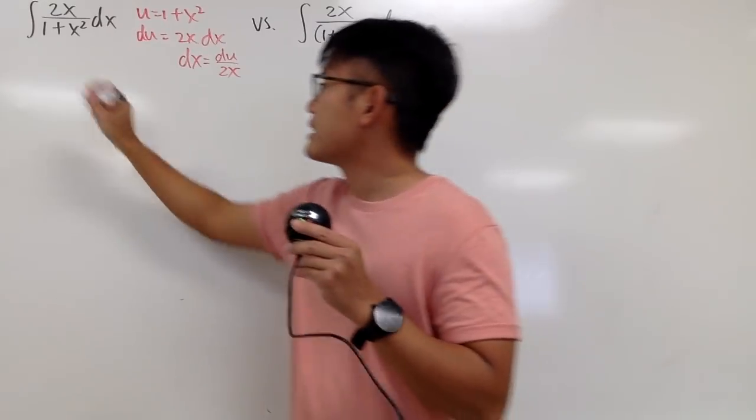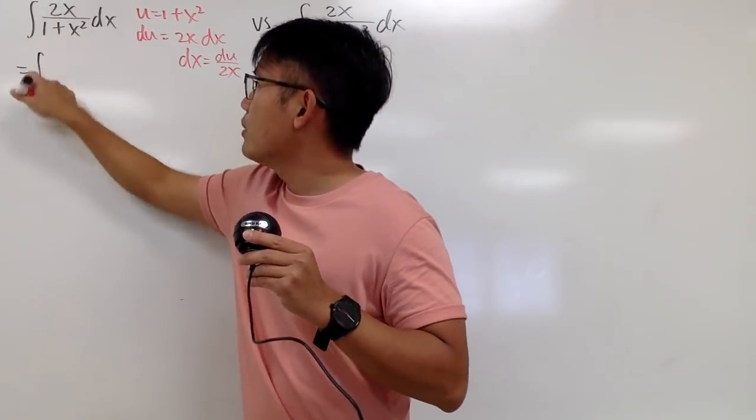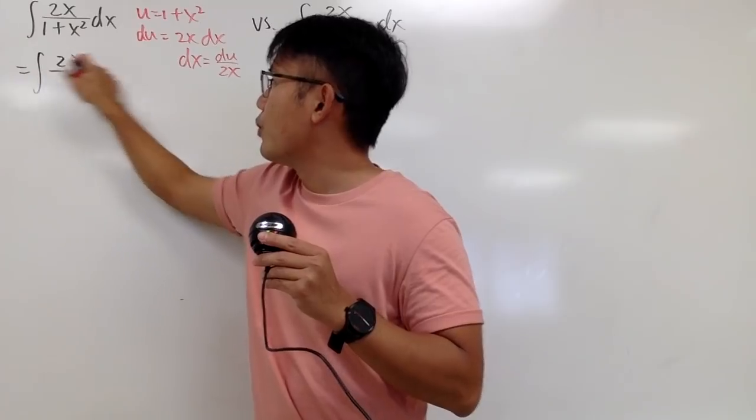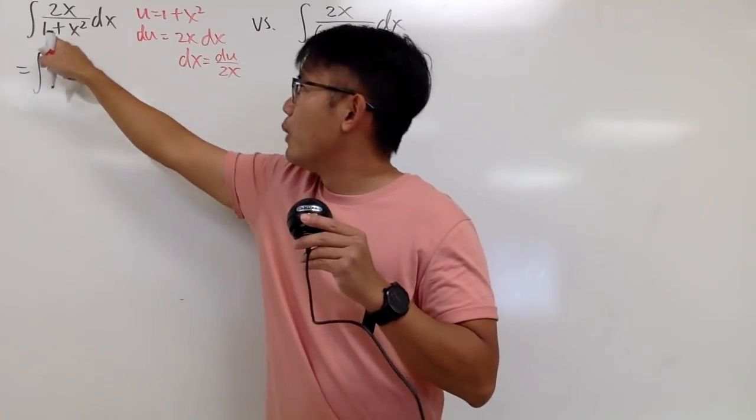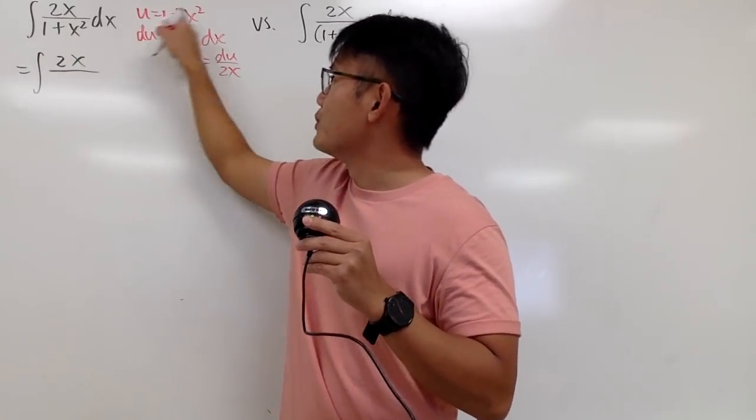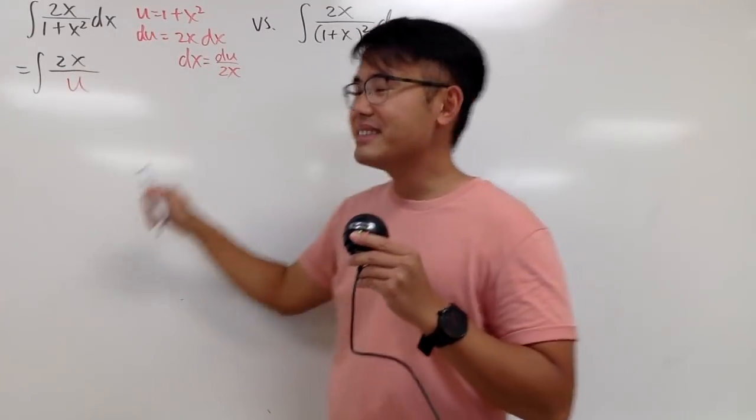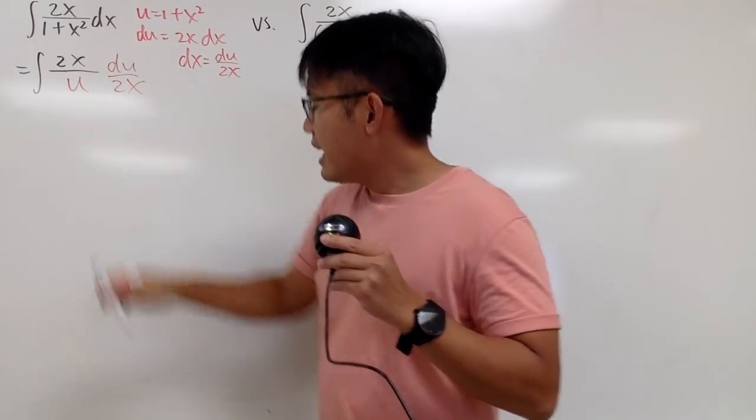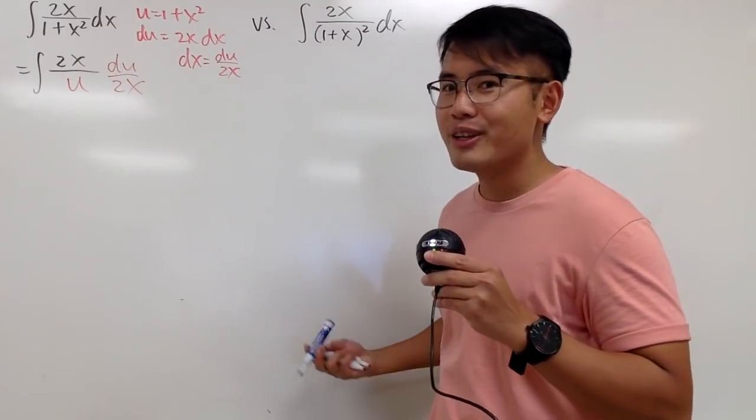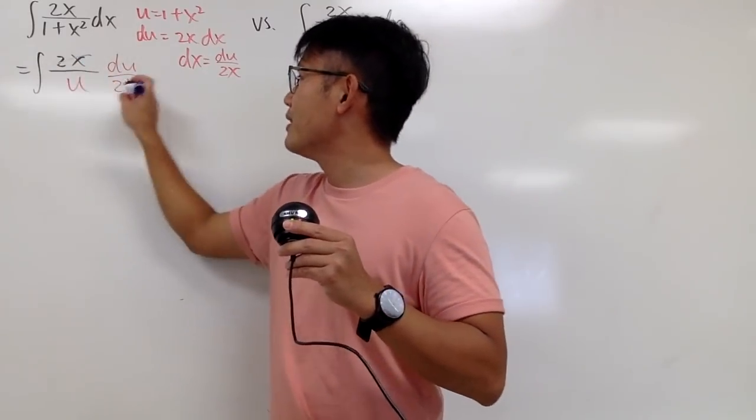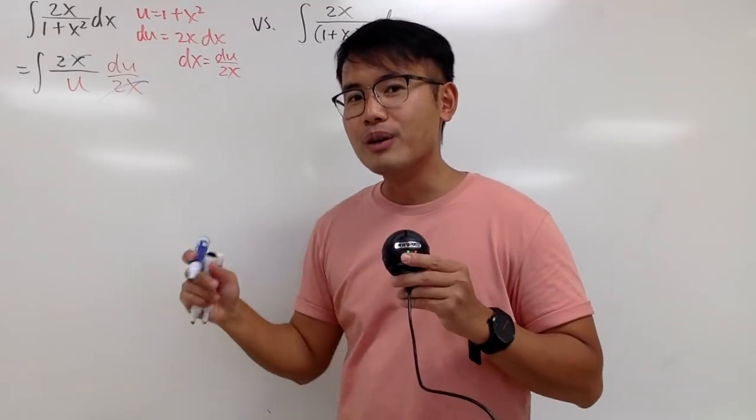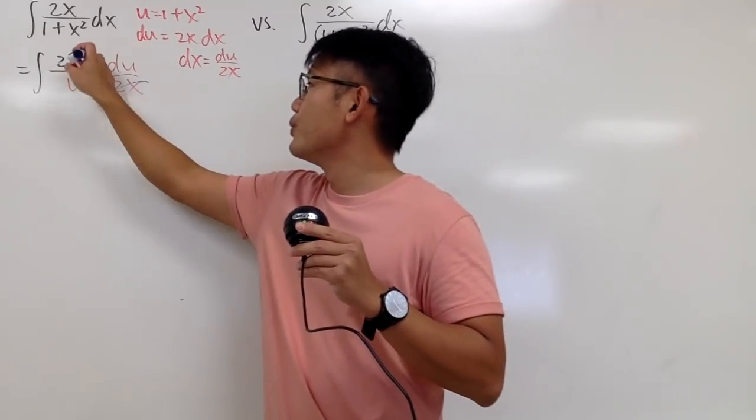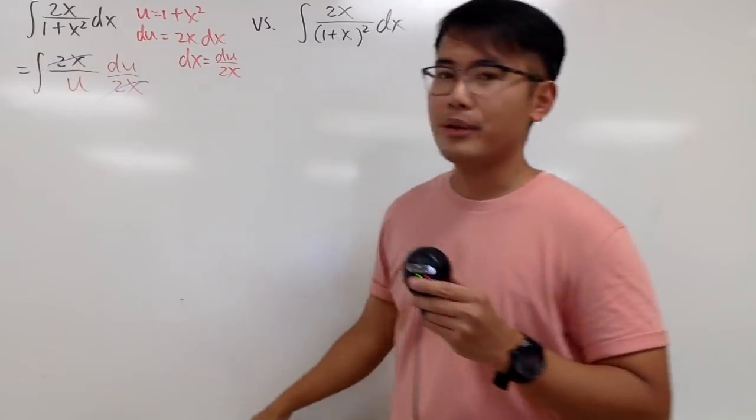And we see that this is the integral, 2x on the top, over we have 1 plus x squared, which is the u, so let me write that down. And the dx is du over 2x. And we see that the cancellation happens right here and right here. And this integral is completely in the u world. So that's very nice.